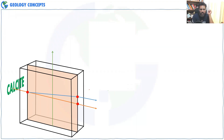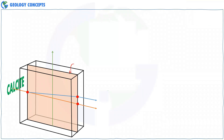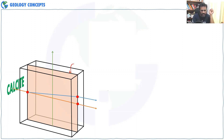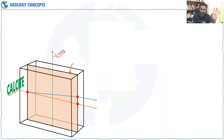First, understand that this is a cuboid type of shape and there is a plane inside it. You can see the c-axis running through this plane — this green color is the c-axis. Now, calcite is written here. When light enters, it will break into two parts: one will go in a straight line because it is coming perpendicular, and will behave as ordinary light — we call it the ordinary ray.